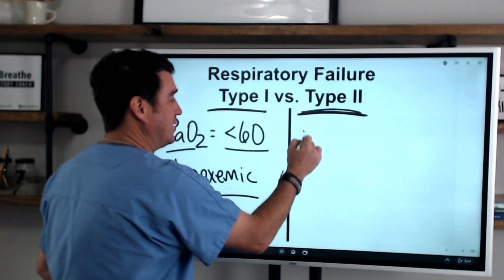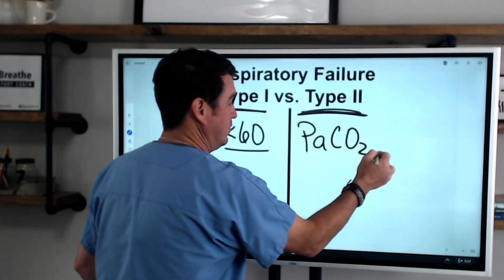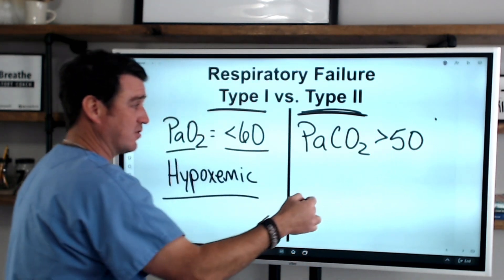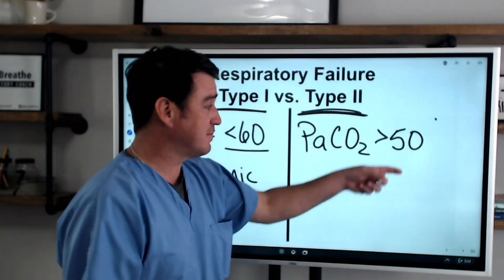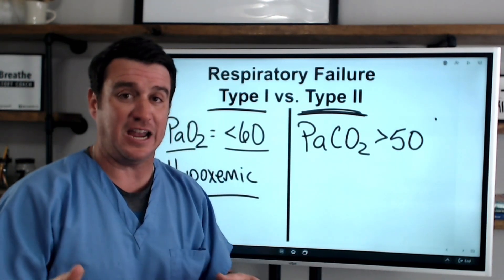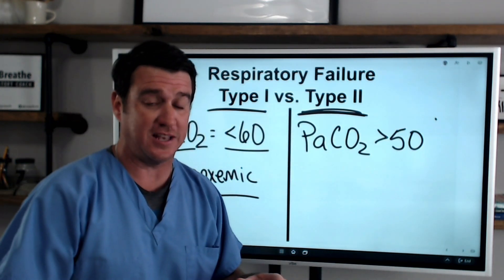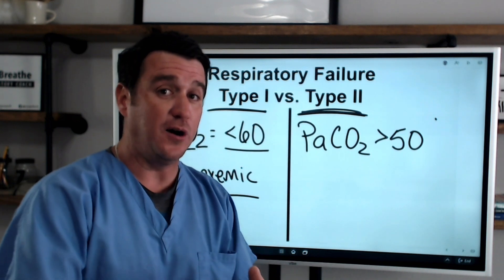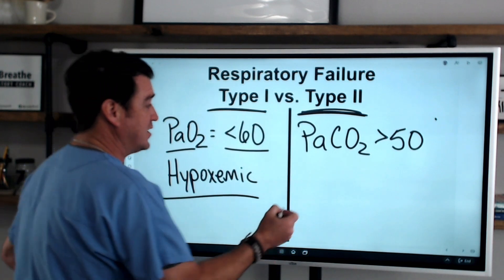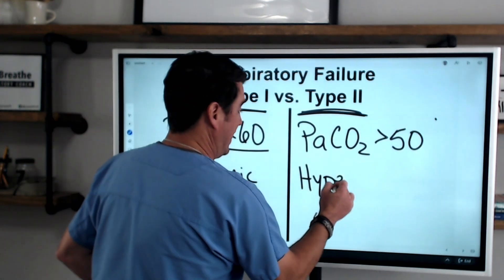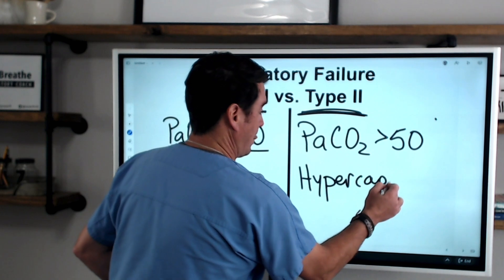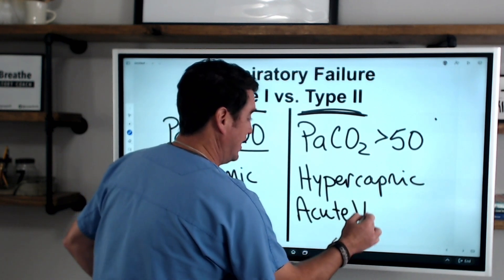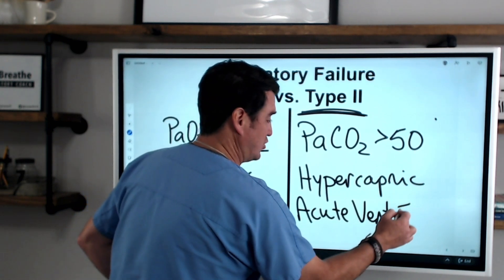Now type two — when we talk about that, we're going to be talking about our arterial CO2, and that's anytime it's greater than 50 millimeters of mercury. When it is greater than 50 millimeters of mercury, you're looking at type two respiratory failure. Type two respiratory failure can also be referred to as hypercapnic respiratory failure. You may also hear this referred to as acute ventilatory failure.